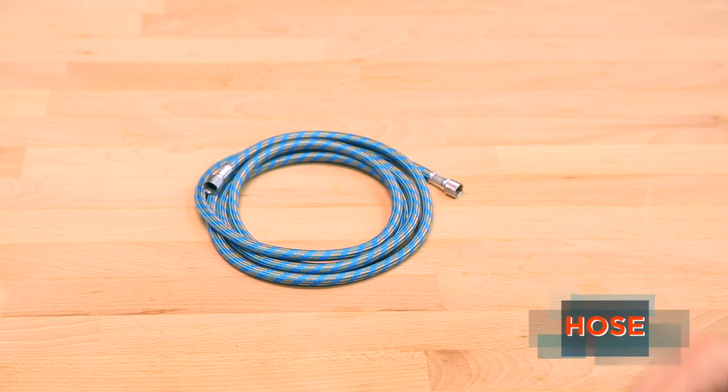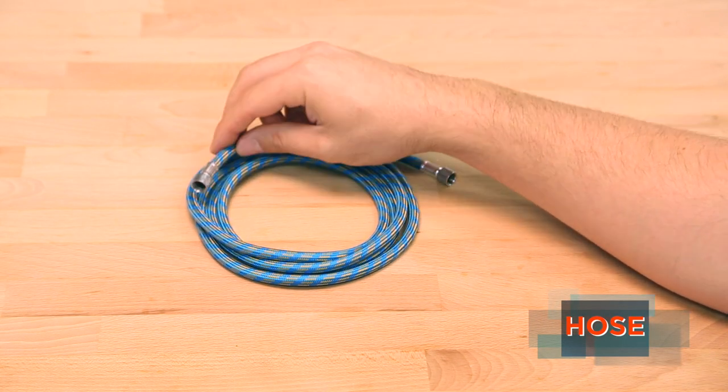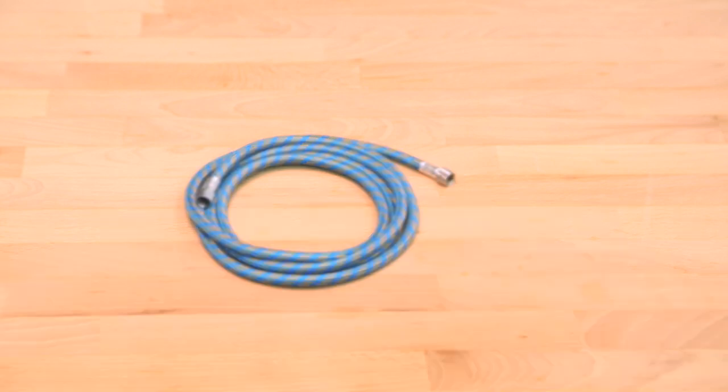The hose is what connects your airbrush to the compressor. It's always good to have a variety of hose lengths on hand, so that you're not confined to a small working area. Just be aware that the longer the hose, the more condensation you can accumulate in the line.